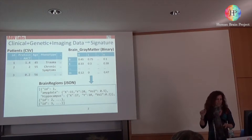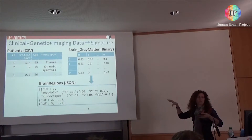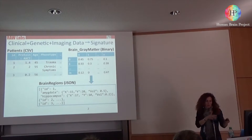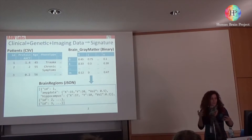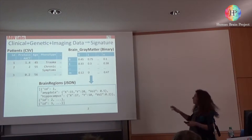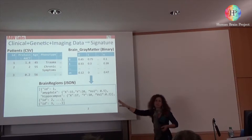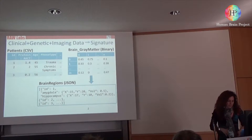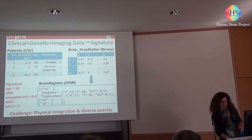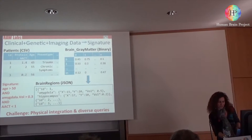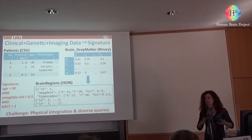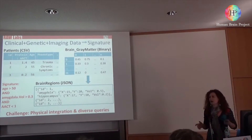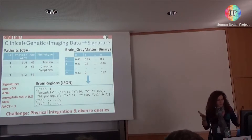On the right-hand side, there's a byproduct of that imaging binary file — a JSON file which associates the gray matter volume measurements with areas of the brain such as the hippocampus. So CSV, binary, and JSON are three different data representation formats — data is coded in the computer in three different ways. A signature — the final output — would be something like: patients who are above the age of 50, whose amygdala's gray matter volume is above 0.3, and have some protein level lower than one, will suffer from Alzheimer's with high probability. That's one kind of signature.